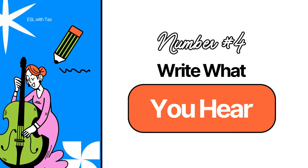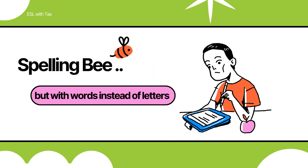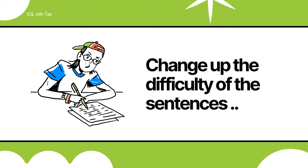Four: write what you hear. Prepare a list of phrases and read them to your students while they write out word for word what they hear. It's similar to a spelling bee, except rather than spelling out a word, they have to write full sentences. You can change up the difficulty depending on the level of the class you're teaching.